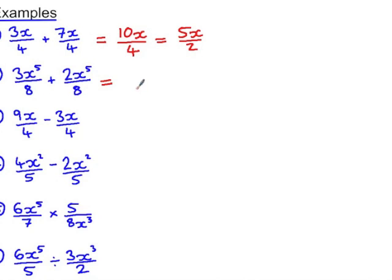Secondly, we have a common denominator of 8. 3x to the power of 5 plus 2x to the power of 5. That's 5x to the power of 5.